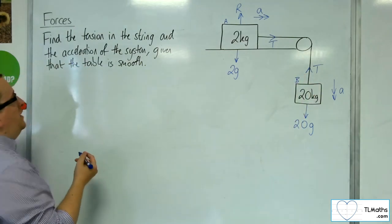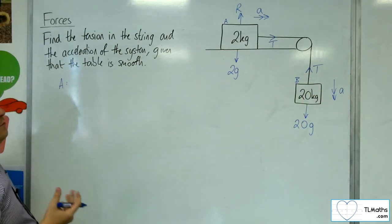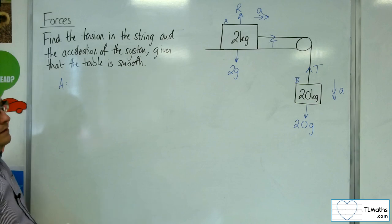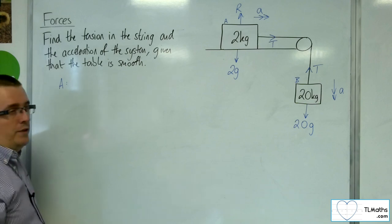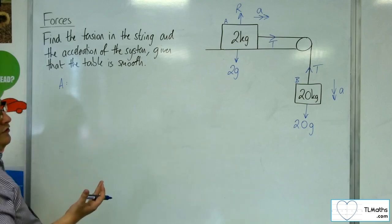So if I look at particle A, I don't need to resolve vertically. I'm not interested in that, because there's no acceleration vertically. So r will be equal to 2g.